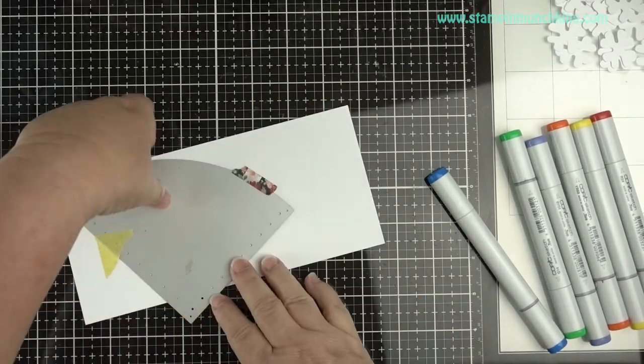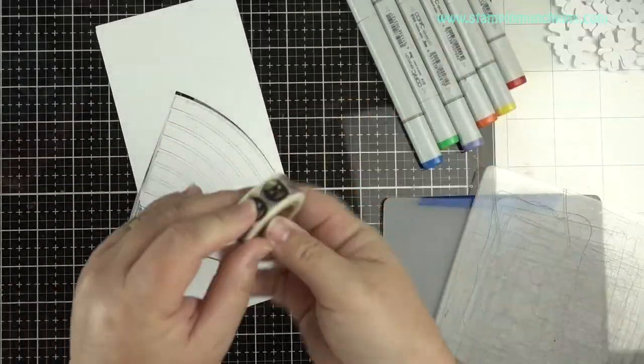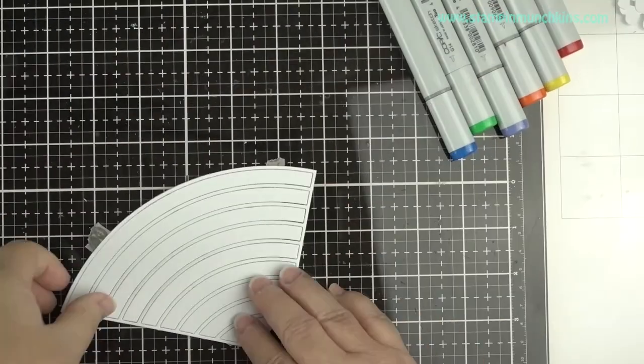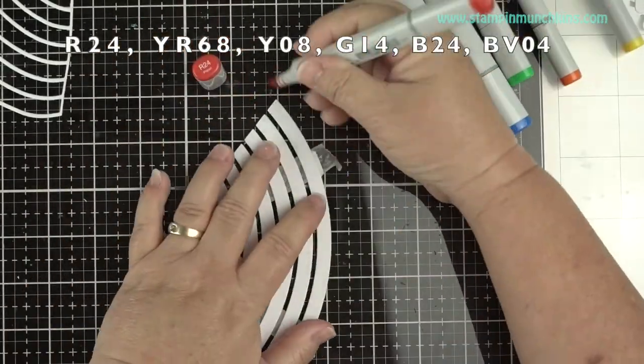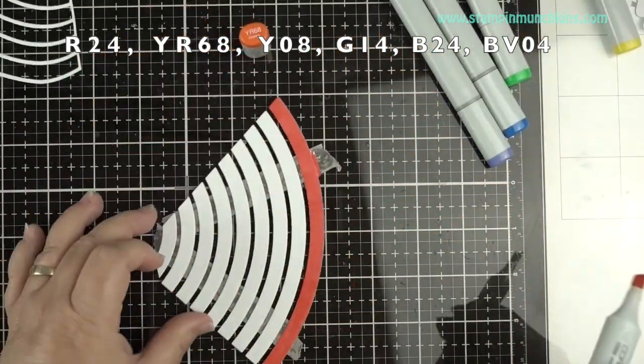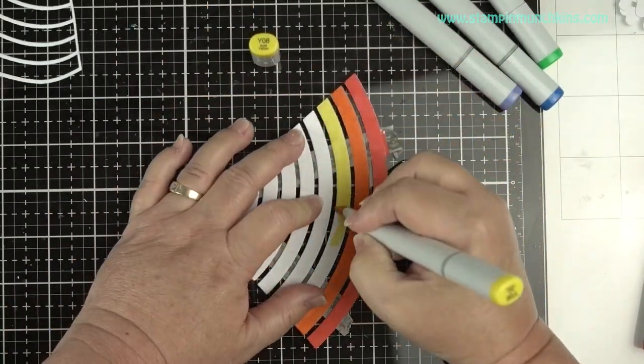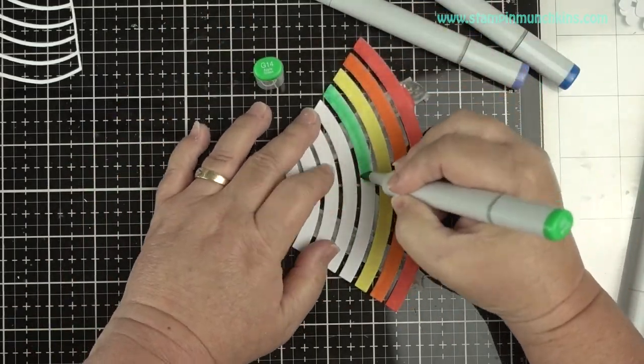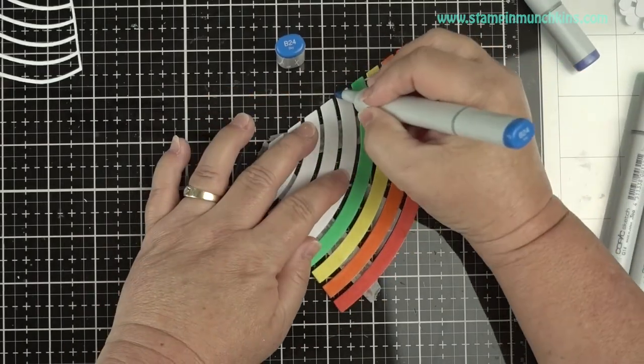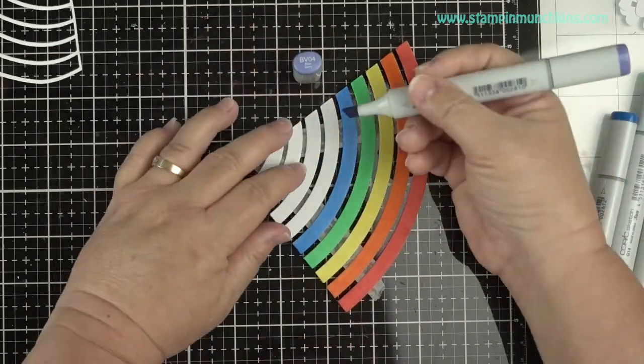And now I'm doing the Pink Fresh Rainbow die. I don't care about that corner because I'm just using a few of the rainbow rings, and I'm putting washi tape on the back so it stays together. I just want the rings not the outside, and I'm coloring them using the Copic colors - red, orange, yellow, green, blue and blue violet.